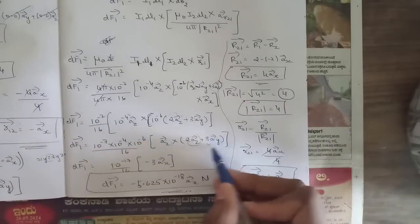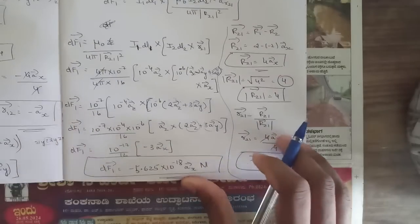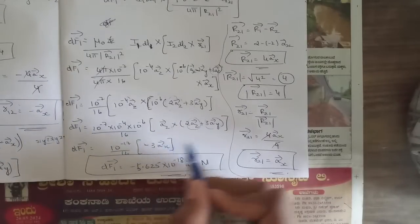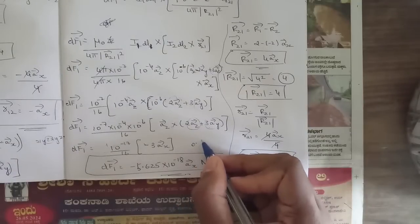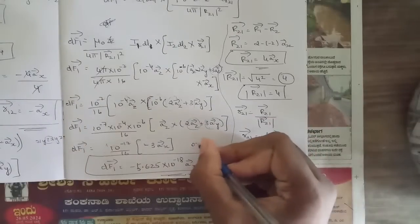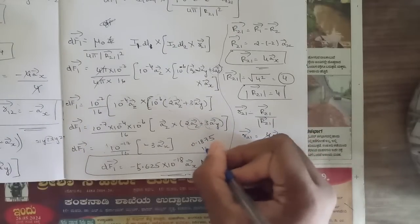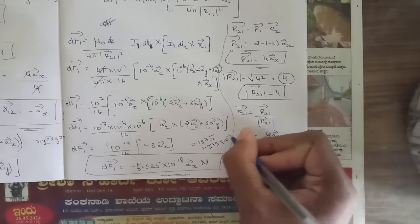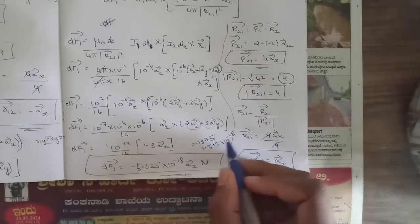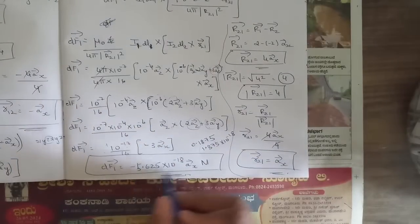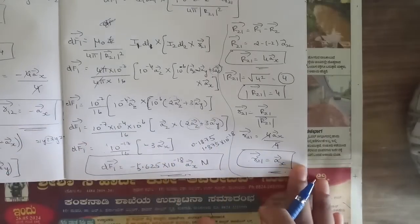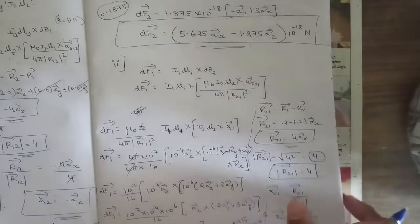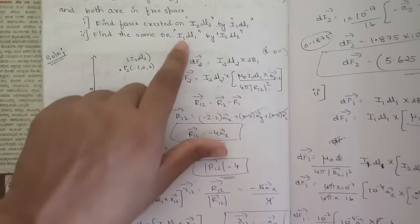So df1 equals 10 to the power minus 7 over 16 times 10 to the power minus 4 az cross (2az plus 3ay). Now az cross 2az equals zero. For az cross 3ay: z and y anticlockwise gives minus ax, so 3 times minus ax gives minus 3ax. With 1 over 16 equals 0.1875 times 10 to the power minus 17 equals 1.875 times 10 to the power minus 18, the final answer is df1 equals minus 5.625 times 10 to the power minus 18 ax newtons.